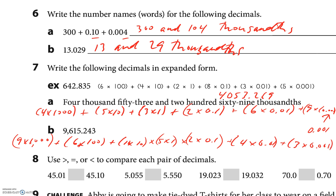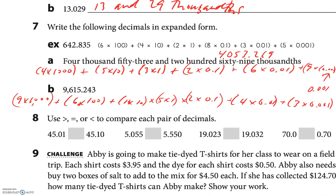Now comparing decimals. These both have forty-five, but look — one has a zero and the other has a one in the next place, so it's less than. Five and five — that five is bigger, so greater than. Nineteen and nineteen — zero versus three in the next place, so less than. They're all less than. The last one they gave us the answer.